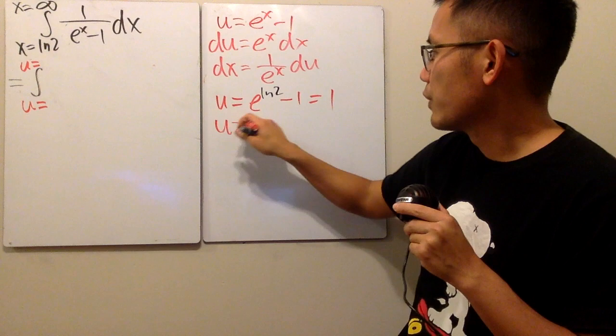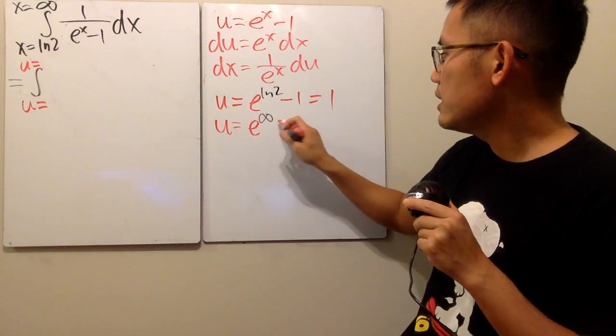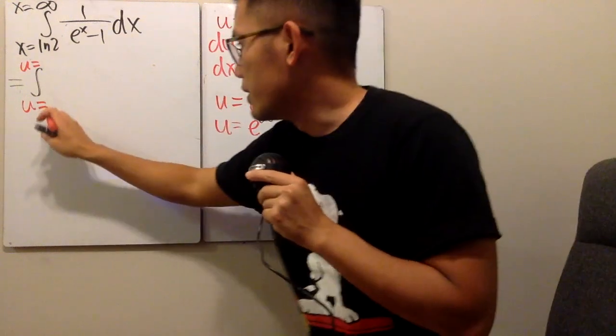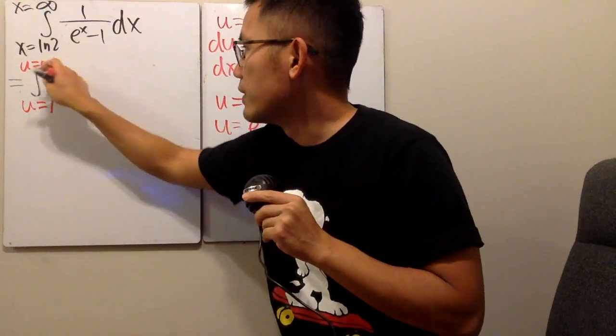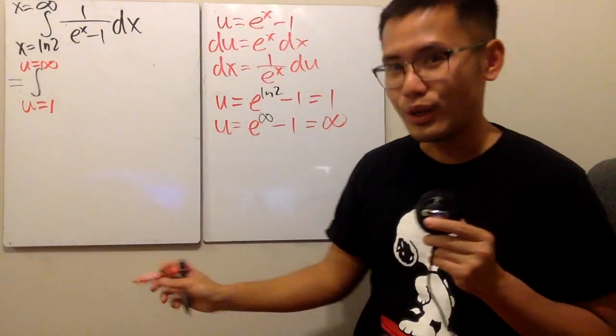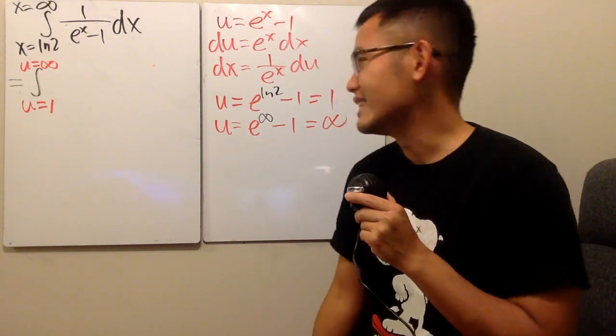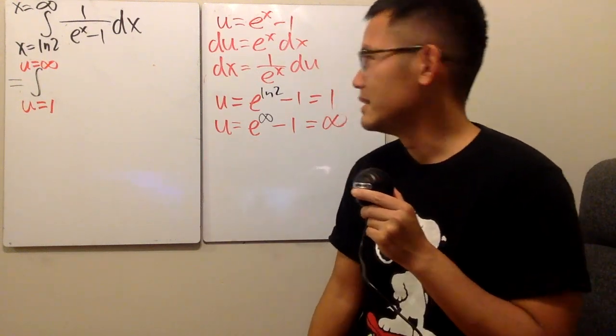And then of course, you can also check for infinity, e to the infinity minus one, that's going to give you infinity. So for this, it will be from one to infinity, just like earlier, but you don't have the square root. So this is still the same number because square root of one is one.